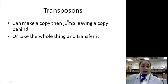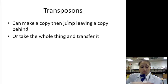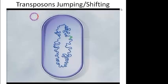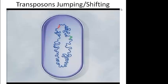Transposons can make a copy and then jump with that copy, leaving the copy behind so that we have two of the same genes. Or, it can actually take it all out and move it to another location. Transposons are segments of DNA capable of shifting from one location to another. A transposon enters the cell by being carried on a plasmid, and can then move from the plasmid into the host cell genome, or from one site on the host genome to another. When some transposons move, they replicate, leaving a copy in the original position. A transposon can also move from the host genome to a plasmid.